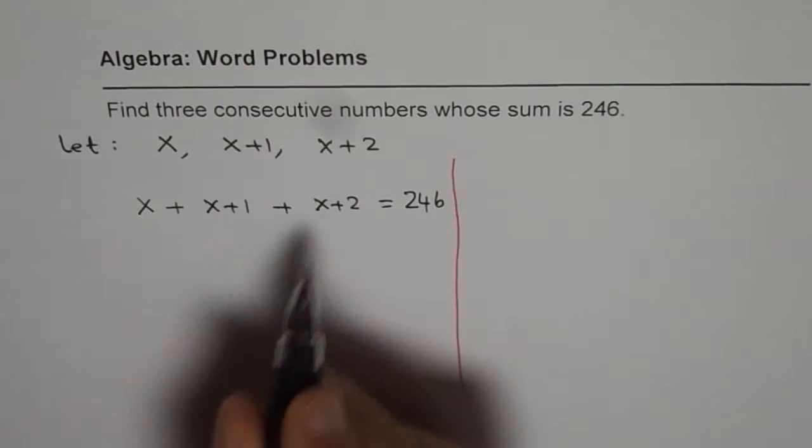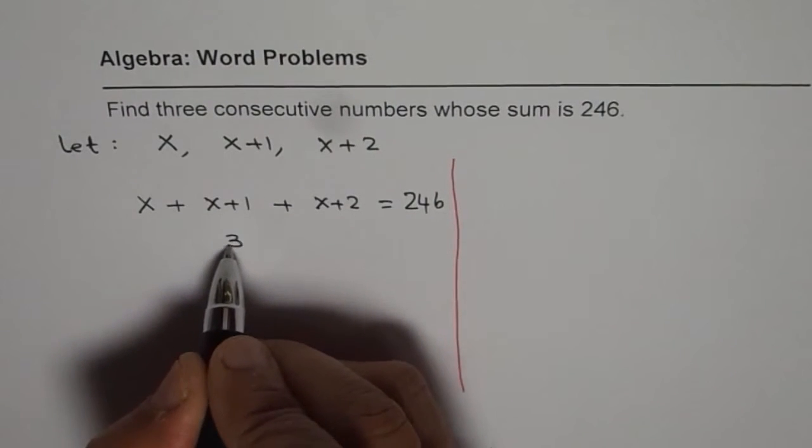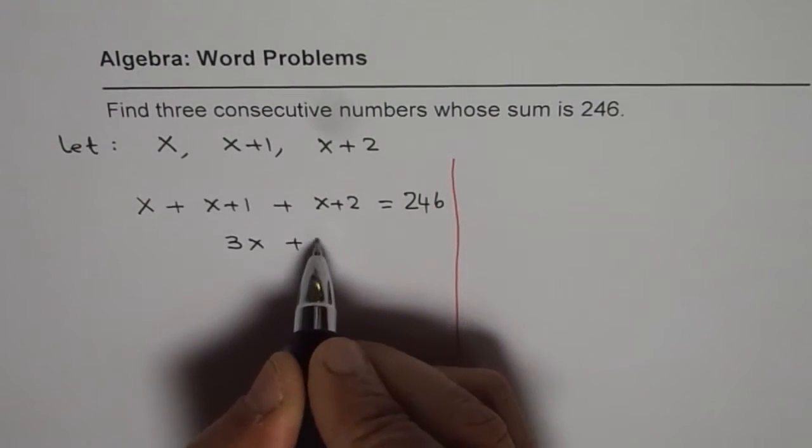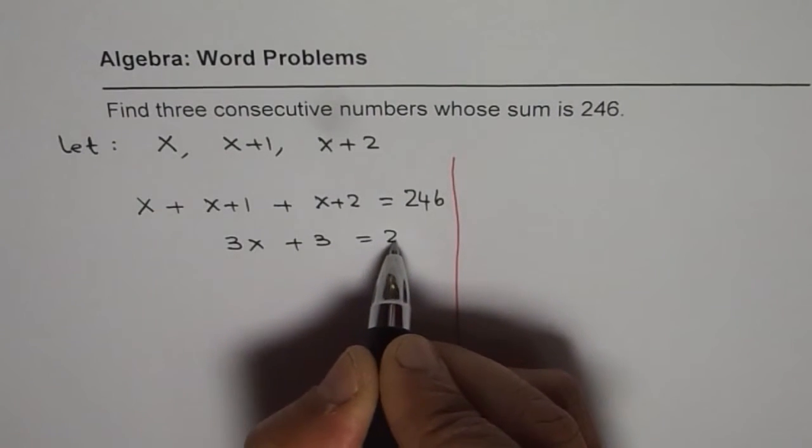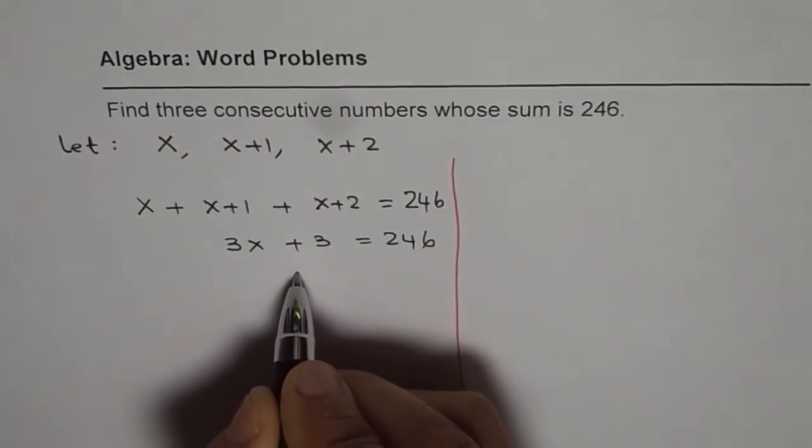Simple. Let's add the like terms which is 3x here. That plus 3 equals 246. Let's subtract 3 from each side.